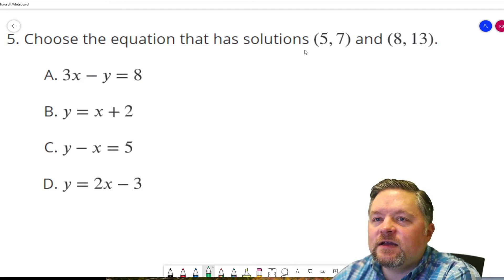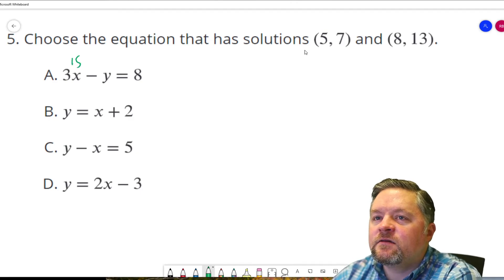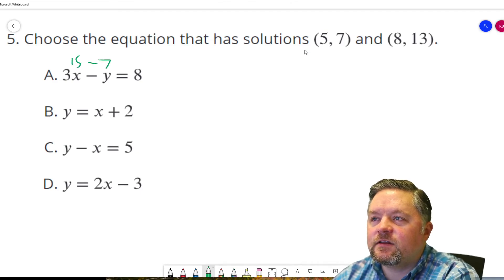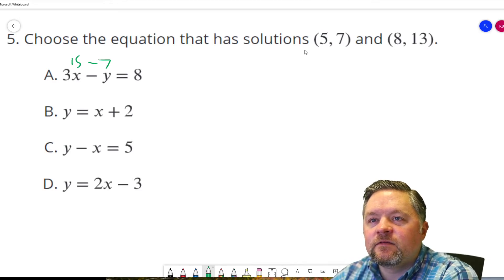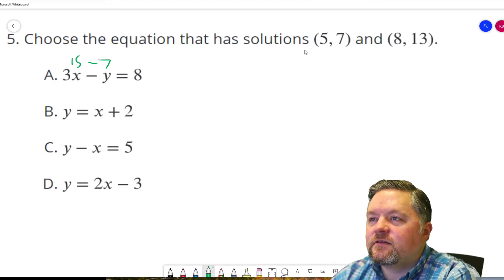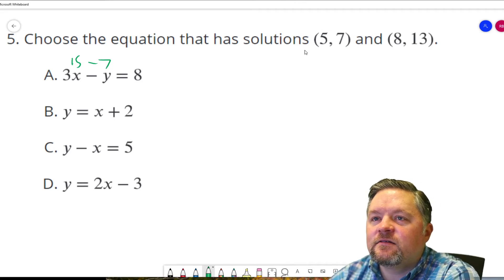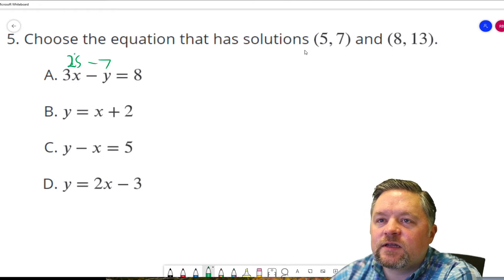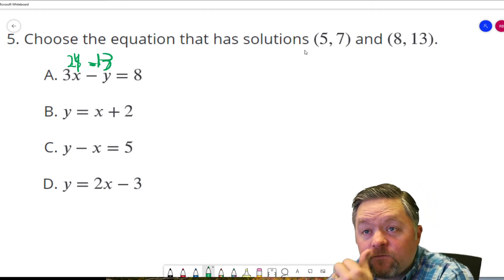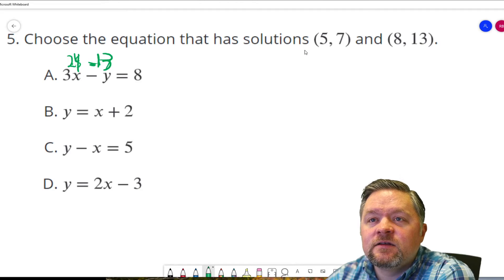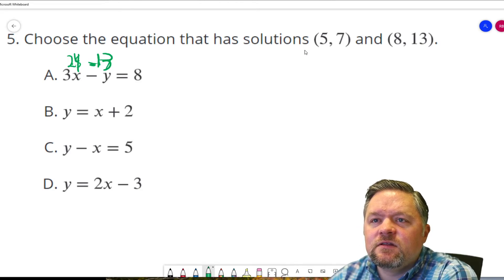3 times 5 is 15. Minus 7 is... 15 minus 7 is 8. That one works. Now, let's test it with 8, 13. 3 times 8 is 24. Minus 13. 24 minus 13 is 11. So, it's not this one.